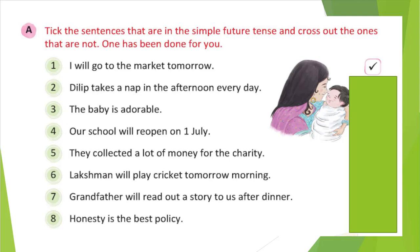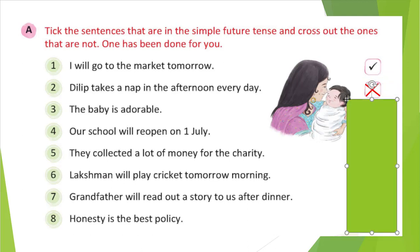Read the first sentence: I will go to the market tomorrow. We know that simple future tense has will plus verb, and this one has will — so this is correct. Second sentence: Deleeta takes a nap in the afternoon every day. Here will is not there, so we cannot say this is simple future tense — this has to be wrong.